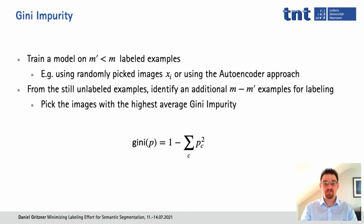For each pixel, we computed the so-called Gini impurity: 1 minus the sum over the squared probabilities. This tells us how confident the model is. If it's very confident — meaning one probability is close to 1 — the Gini impurity will be close to 0. If the model is uncertain, similar to a uniform distribution, the Gini impurity will be very high. We computed the average Gini impurity for each unlabeled example and then picked those with the highest Gini impurity to add to our training set — these are the examples which can give the model the most information it doesn't already have.